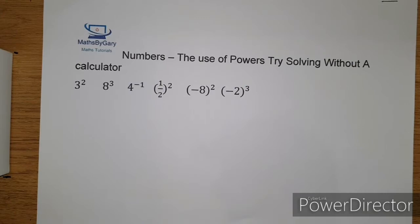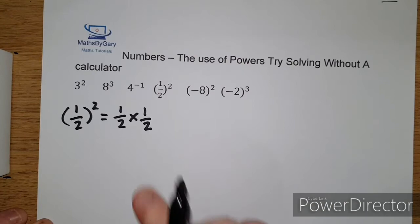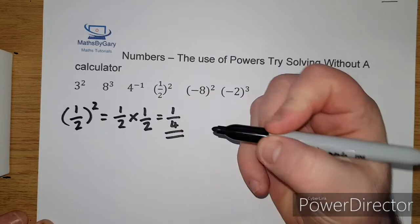The next one we have is a half squared. So how do we work out 1 half squared? We have a half squared, so it's a half times a half. We just check 1, 2. We've done it twice and that would give you a quarter.